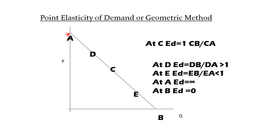At point A, the upper segment is 0. So anything divided by 0 is infinity. So at point A, elasticity of demand, price elasticity of demand is equal to infinity. And at point B, price elasticity of demand is equal to 0. So this is point elasticity of demand or geometric method.